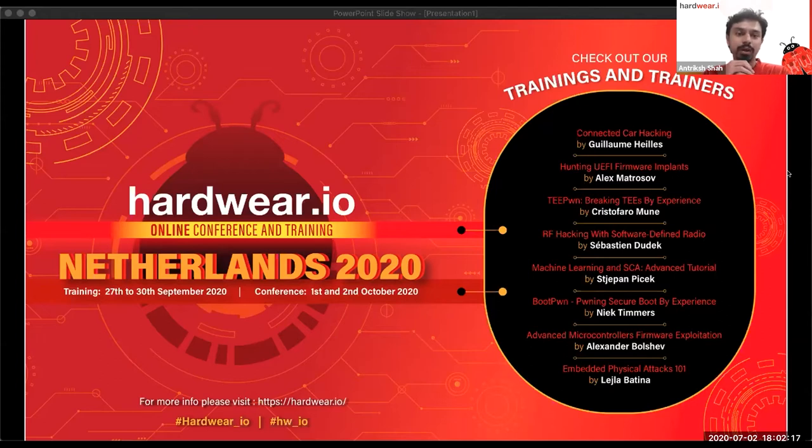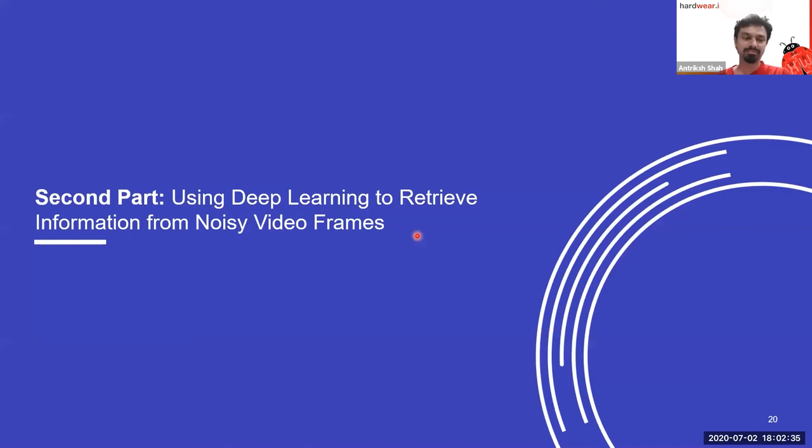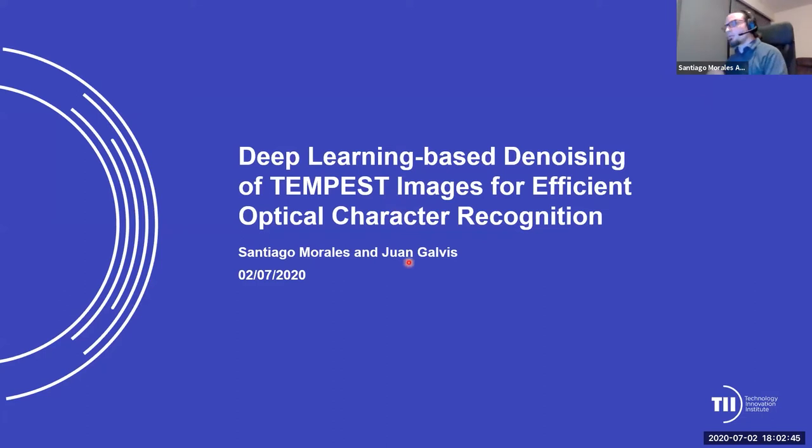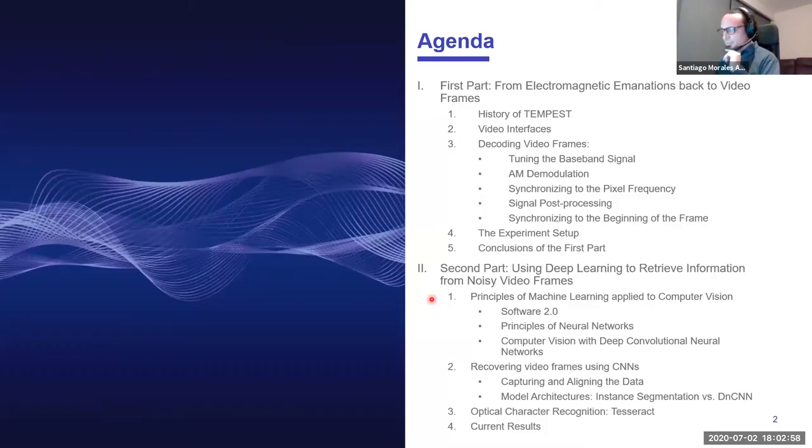For now, Yohan and Santiago, the stage is yours. Okay, thank you very much Antriksh. Good evening everyone. Today's webinar is called Deep Learning based Denoising of TEMPEST Images for Efficient Optical Character Recognition. This consists of two parts: the first part is going to be presented by me and the second part by Juan.